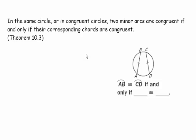Here's another theorem: in the same circle or in congruent circles — that's an important qualifier — two minor arcs are congruent if and only if their corresponding chords are congruent. Corresponding chords are the chords that connect the endpoints of the arc. So arc AB is congruent to arc CD only if segment AB is congruent to segment CD.